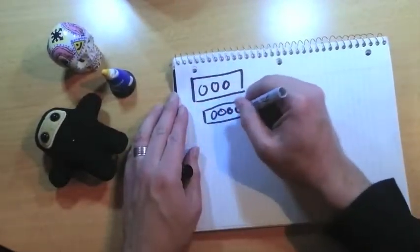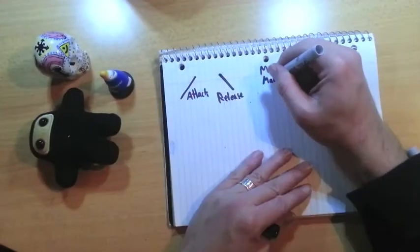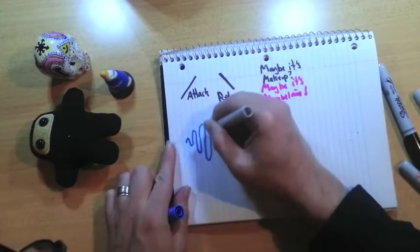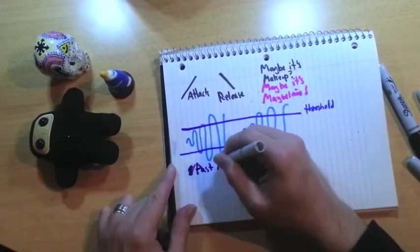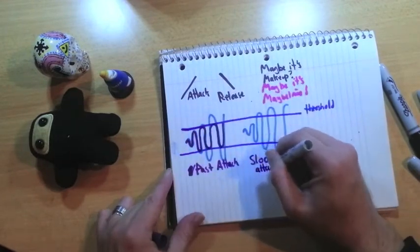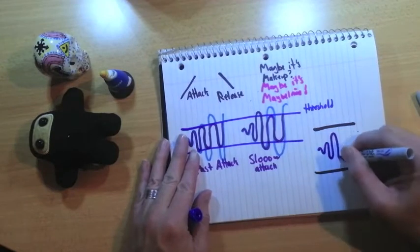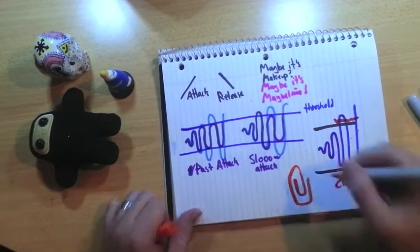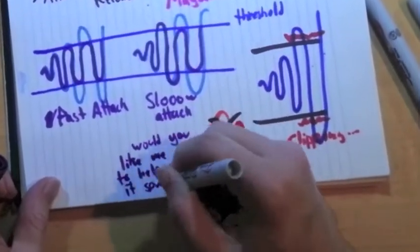Most compressors have more knobs. We're going to talk about three more: attack, release, and makeup. Attack — and I told you these things are weapons of war — is how long before the compressor starts to act when that magical threshold is hit. With an impulse-like sound and the attack is too long, the compressor will miss it entirely. With a really fast attack, it will reduce the level of that clap. The longer you make the attack, the more transparent it will be. But beware of clipping — that's the evil distortion that happens when you push too much volume through.